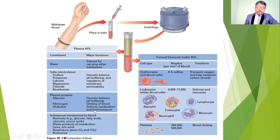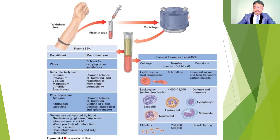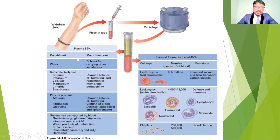Plasma proteins — albumin, fibrinogen, and globulin — are helpful in pH buffering, osmotic pressure balance, clotting, defense, and lipid transport. The main functions of plasma include transporting nutrients (glucose, fatty acids, vitamins, amino acids), waste products of metabolism (urea, uric acid), respiratory gas exchange (oxygen and carbon dioxide), and hormonal regulation.